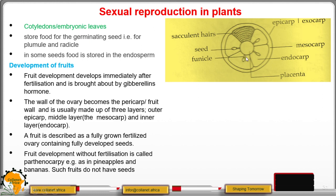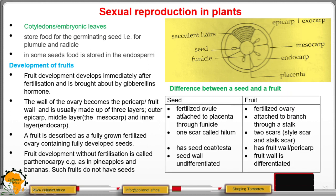The seeds are attached to the placenta with the help of a structure called the funicle. Comparing seeds and fruits: a seed is a fertilized ovule whereas the fruit is a fertilized ovary. A seed is attached to the placenta through the funicle, while a fruit is attached to the branch through a stalk.